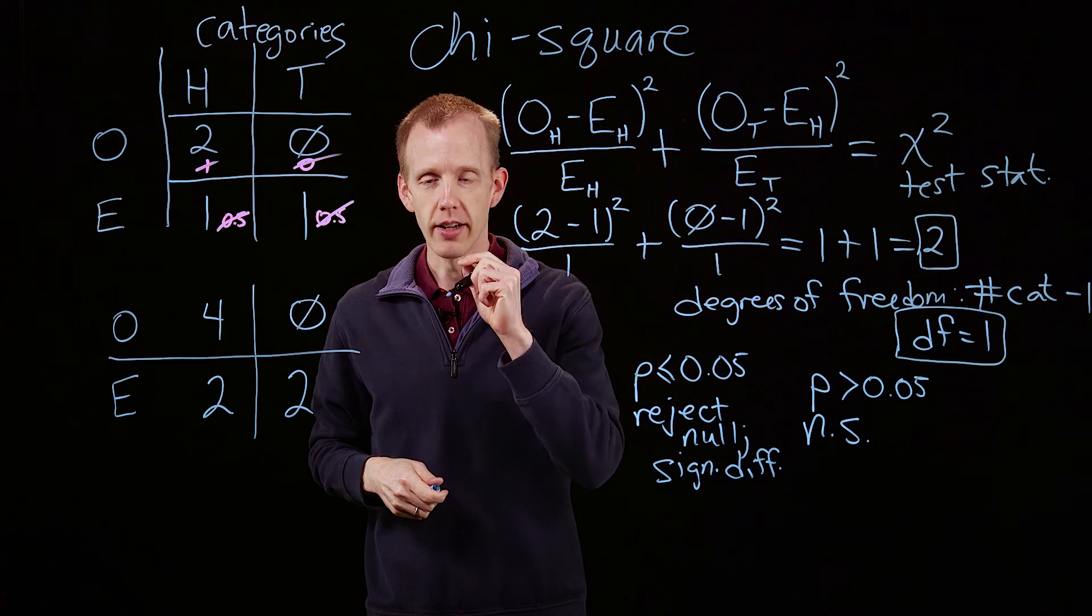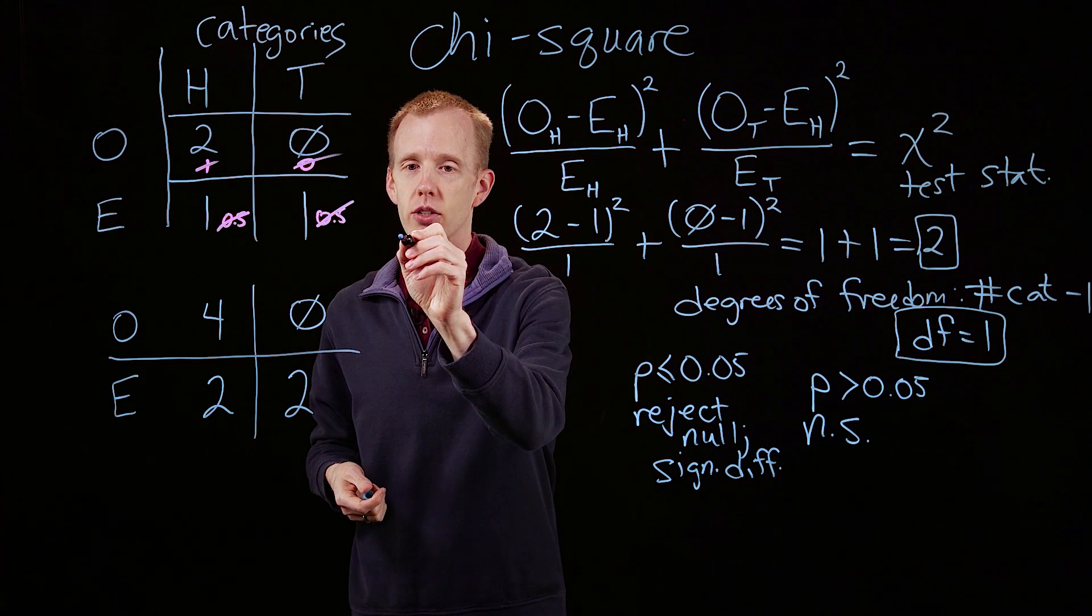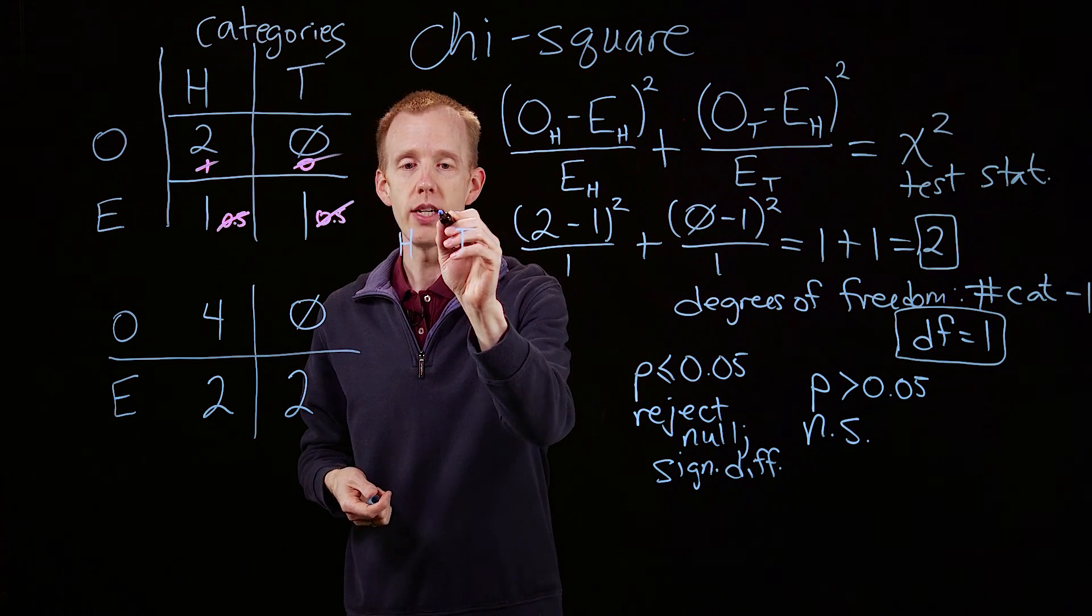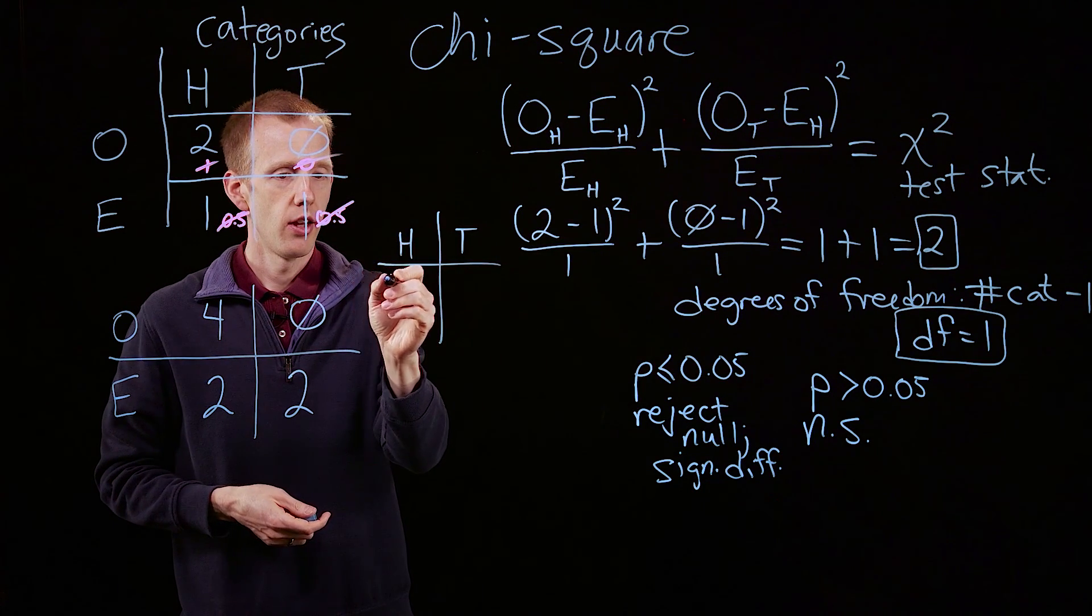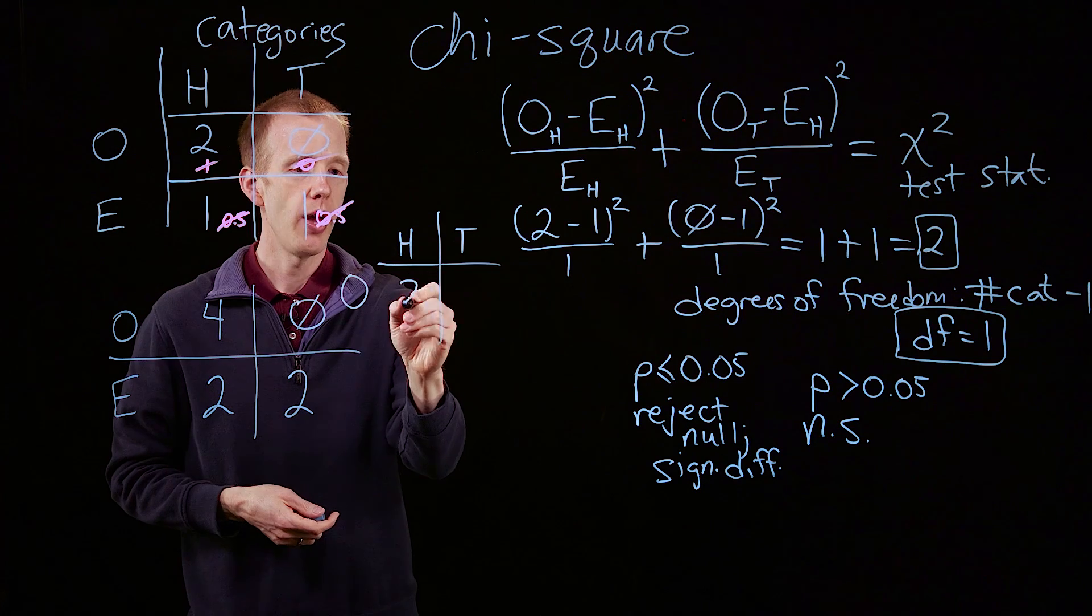Sometimes, we'll find situations where there's something weird that happens. For example, if we flip a coin three times, we might observe two heads and one tails.